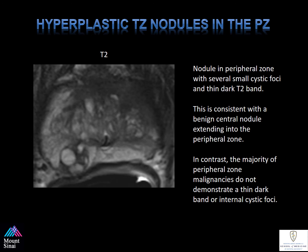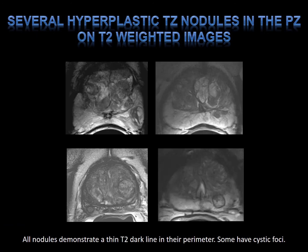This has sometimes been observed in patients undergoing prior transurethral resections of their prostate. In contrast, the majority of peripheral zone malignancies do not demonstrate a thin, dark band or internal cystic foci. It's important to observe these because it took us a long time to understand that these are benign findings. We continued to biopsy these until we had a good grasp of what we were doing. If you're starting a program, evaluate and determine these by biopsy to understand your threshold. Sometimes volume averaging can fool you into thinking there's a malignancy adjacent to the BPH nodule.